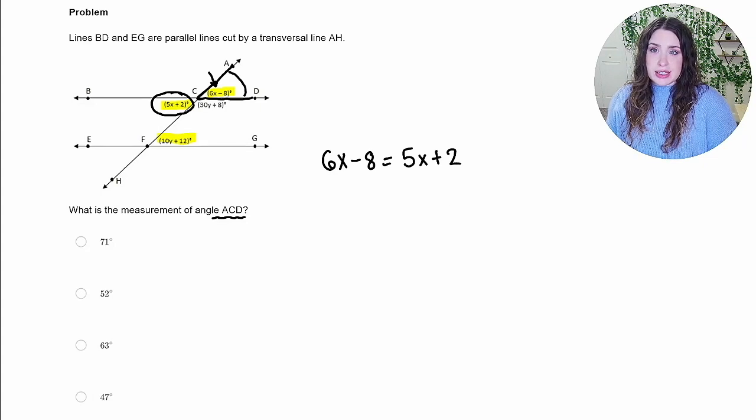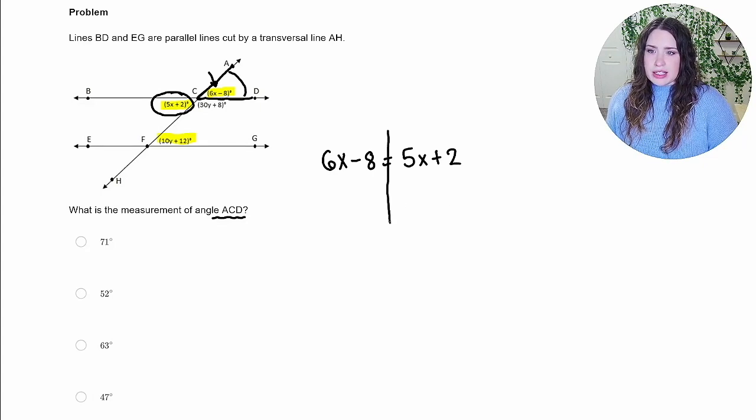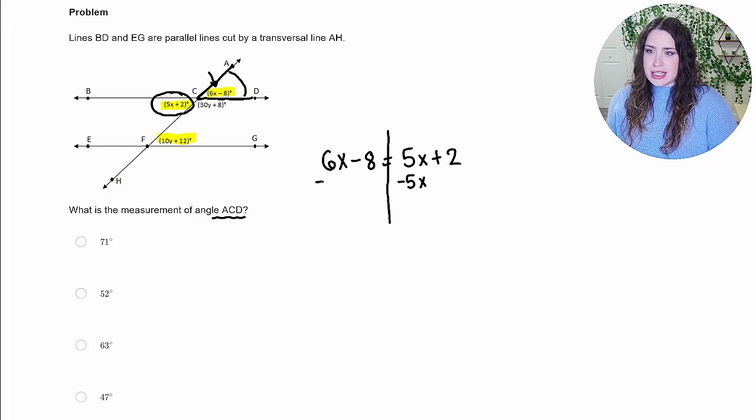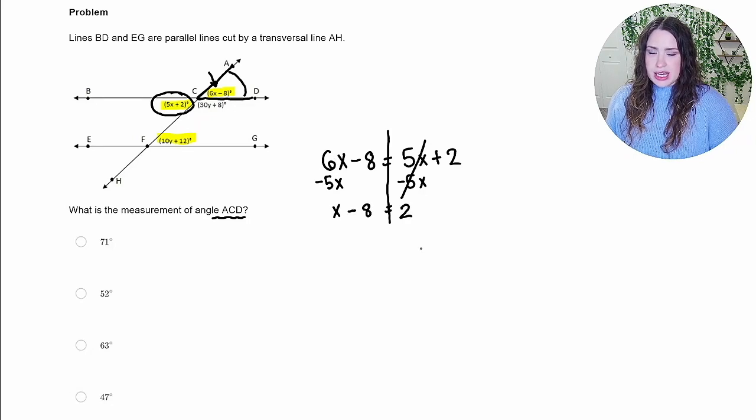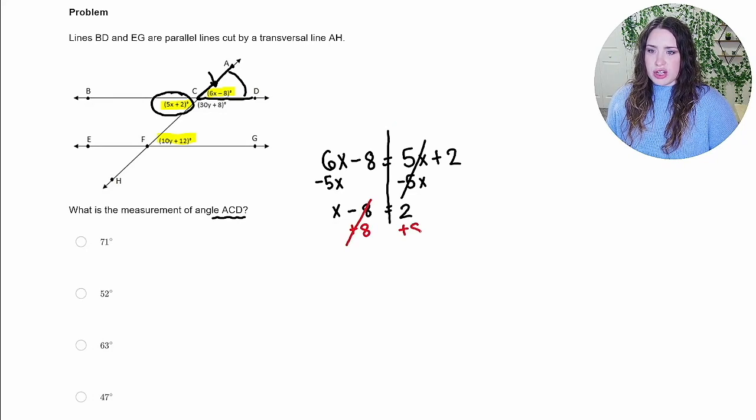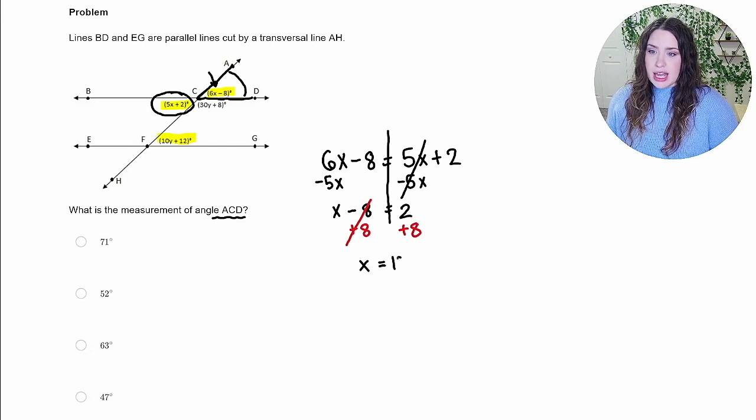And now I can solve for X. So I'm going to go ahead and start by subtracting 5X from both sides of the equation so that my X's are going to be combined. So we're going to be left with X minus 8 equals 2. Now I'm going to go ahead and add 8 to eliminate that 8 and make sure I do that on both sides of the equation. So I'm going to get that X is equal to 10.